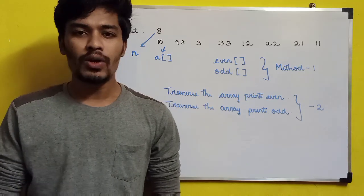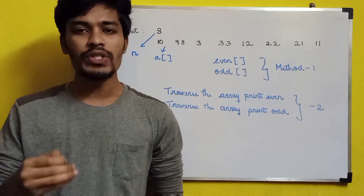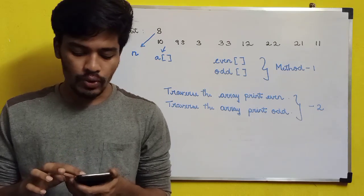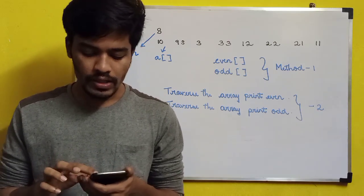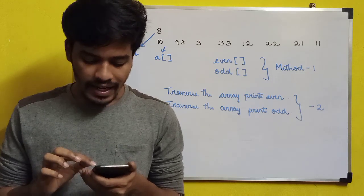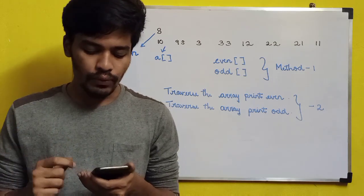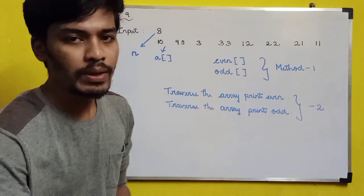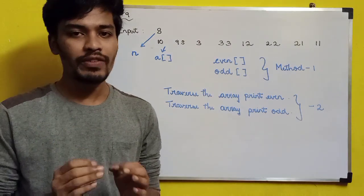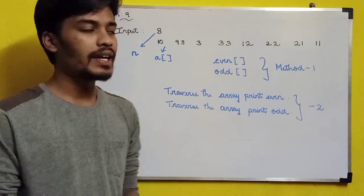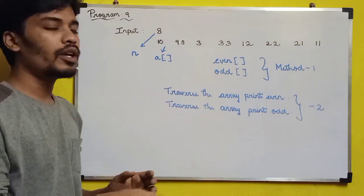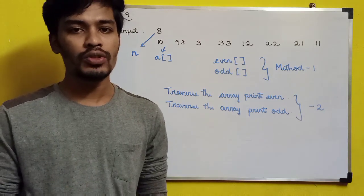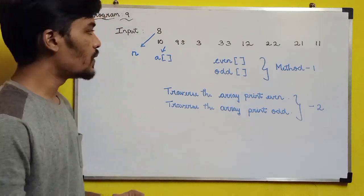In this video I will solve programming questions 9 and 10; remaining questions will be in the next video. Question 9: write an algorithm to help a shop owner with product storage so that all products with an even ID are stored together, followed by products with an odd ID. The logic is simple — get an array as input and print even numbers first, followed by odd numbers. There are two methods to solve this.